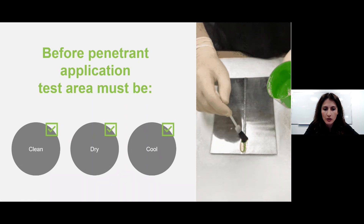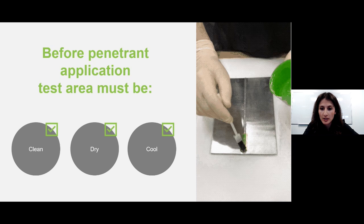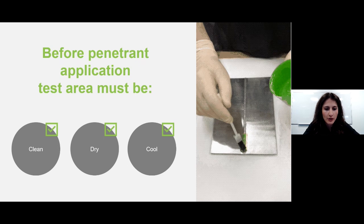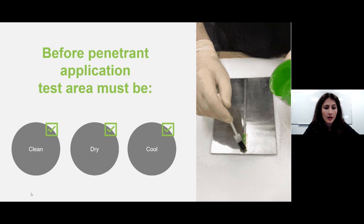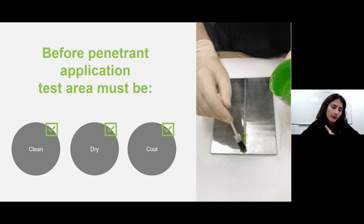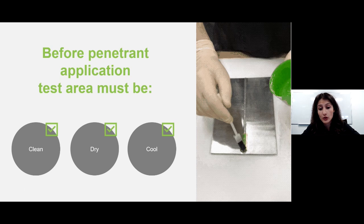Here we have a short video of penetrant application with a brush over the area to be inspected. Before applying, make sure the test area is clean, dry, and cool — by cool I mean temperature. The temperature of the penetrant and the component should not get too low or too high; it should be around 40 to 100 degrees Fahrenheit or 5 to 52 degrees Celsius. Very cold parts will cause the penetrant to thicken, slowing penetration and removal. If the environment is too hot, it will cause the penetrant to dry too quickly.